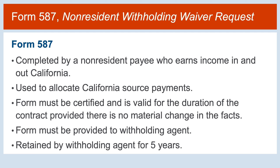Form 587 is completed by non-resident payees that earn income in and out of the state of California to determine if withholding is required and the amount of California source income subject to withholding. Form 587 must be certified and is valid for the duration of the contract provided there is no material change in the facts. The non-resident payee submits Form 587 to the withholding agent and the withholding agent must retain the form for a minimum of 5 years. The form must be available to FTB upon request.